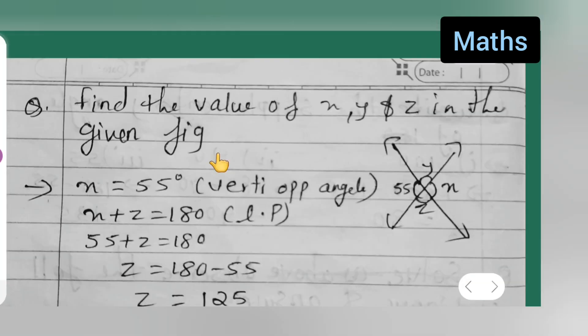So now write down the question: find the value of x, y, z in the given figure. So all can see the figure, right? First, x is equal to 55 degrees, vertically opposite angles. You can see they are vertically opposite angles.